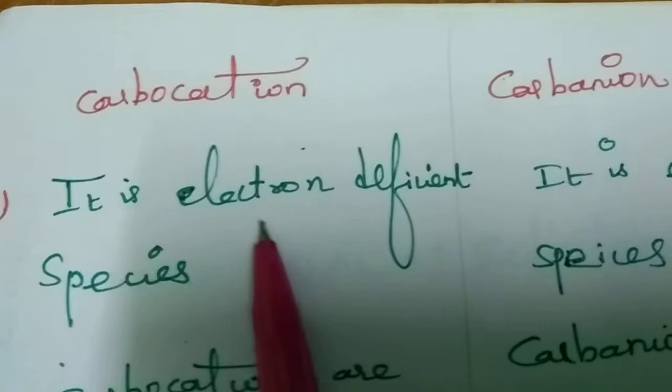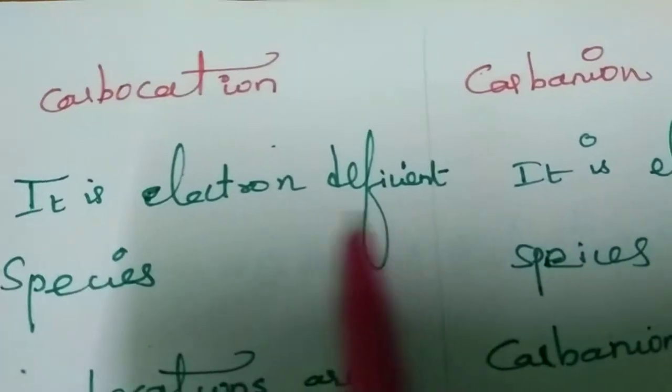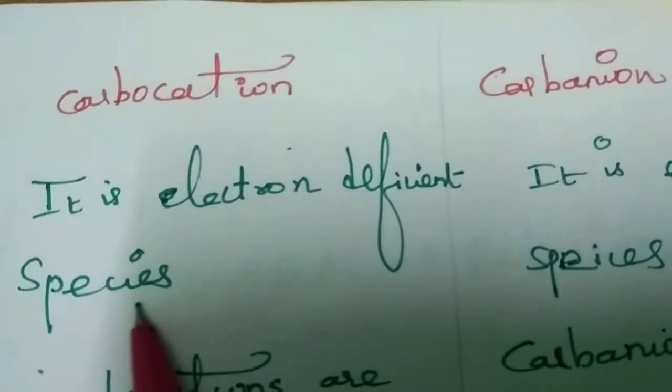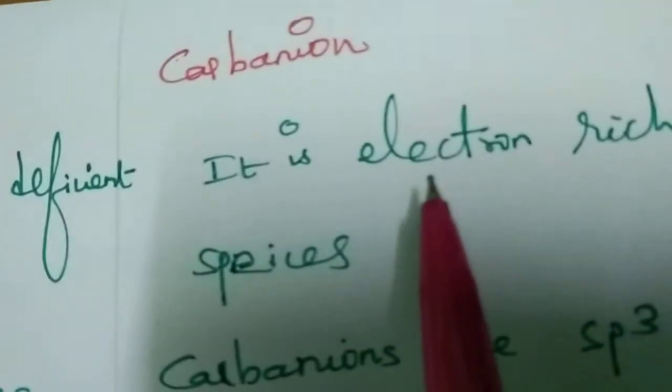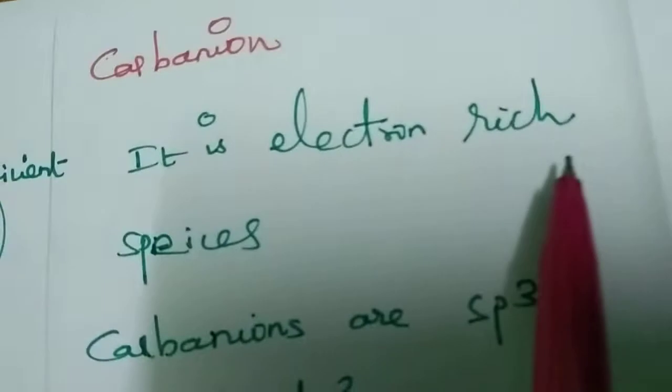Carbocation is an electron-deficient species, whereas carbanion is an electron-rich species.